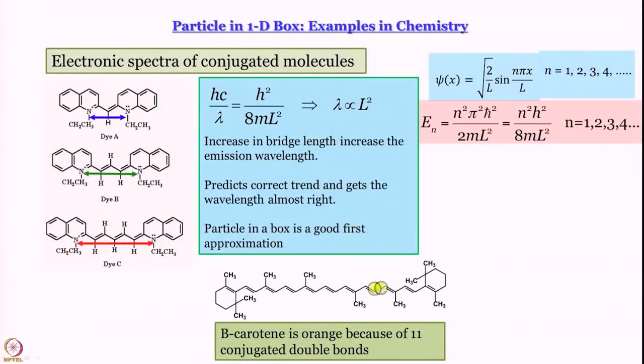However, if one tries to work out the expected absorption wavelength of beta-carotene using the particle in a box model, there is not good agreement. The trend that λ more or less changes with L² is alright, but it is not really quantitative. The longer the chain, the more is the problem, because the number of electrons and nuclei goes up and greater is the disagreement. The agreement between 251 and 258 nm was almost as good as it gets; as we keep increasing the length, the agreement becomes unsatisfactory to bad to very bad. But it still gives us the right trend, so particle in a box is not a bad starting point.